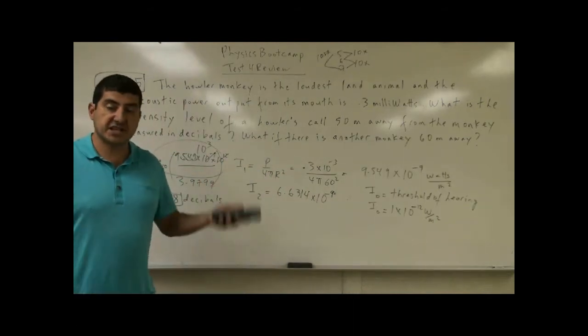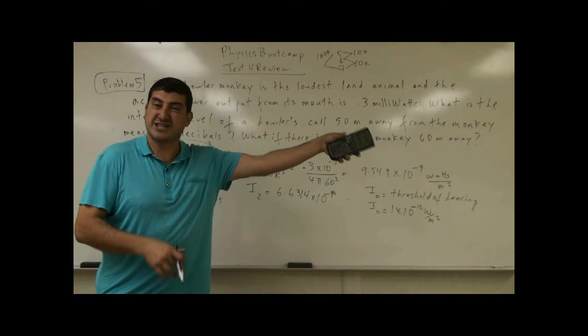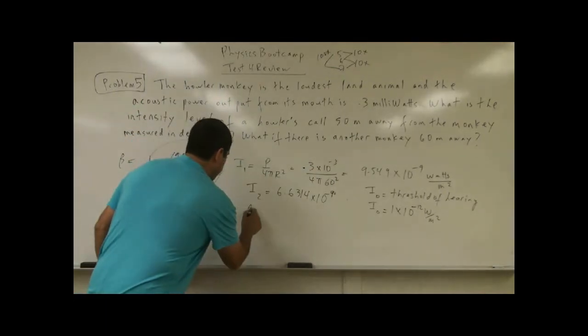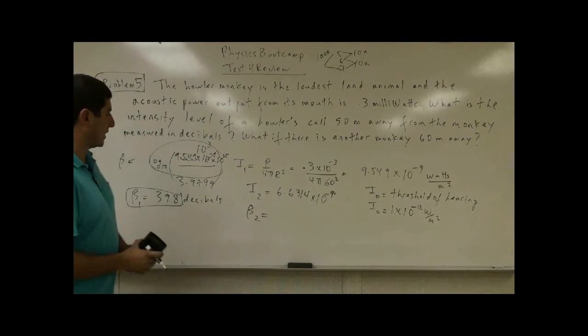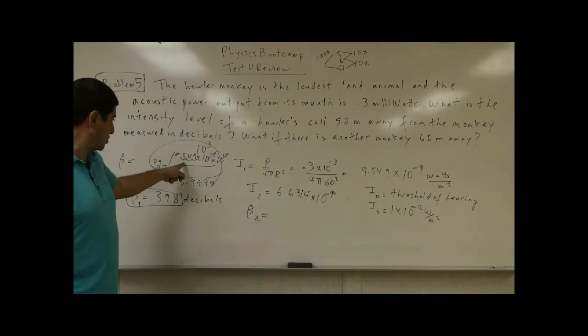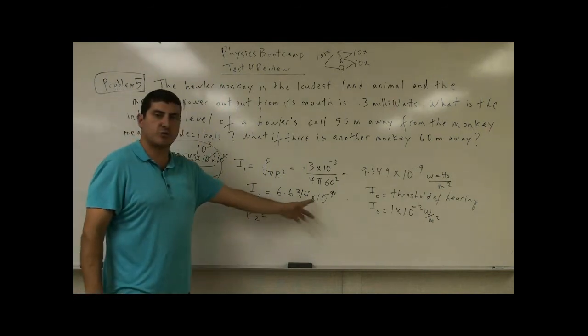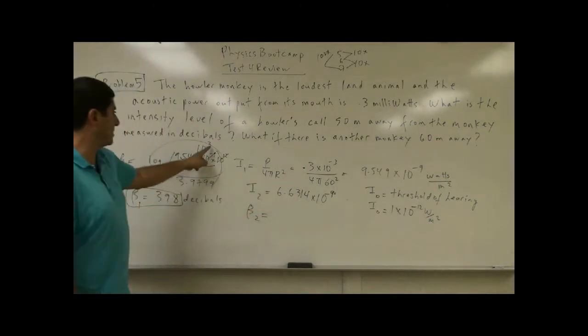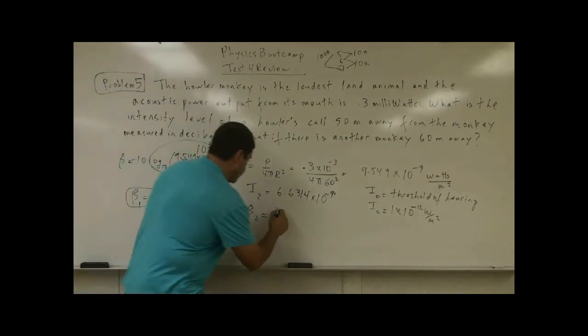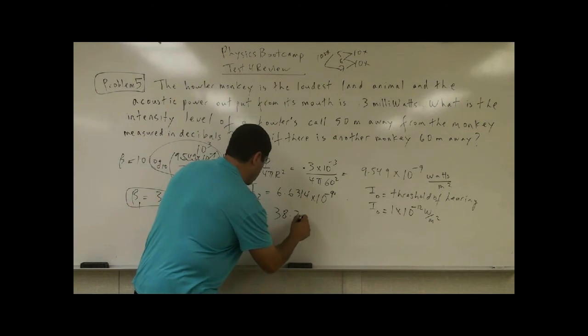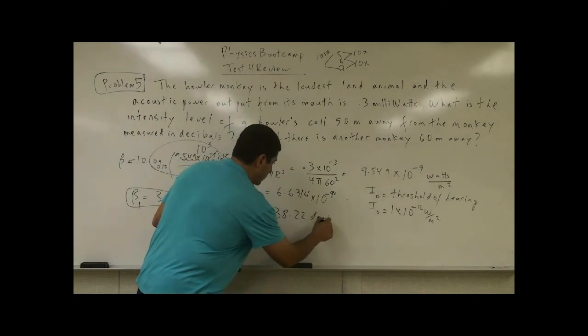Now, what's the decibel scale of that second monkey? It should be less, right? The B₂ we can call that. This one we can call B₁. So what I should go through the same procedure, except instead of 9.549, I'm putting 6.631, and I'm going to multiply this by a thousand times 10. So it's going to be 38.22 decibels.